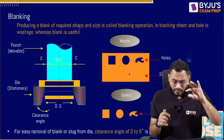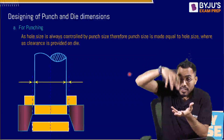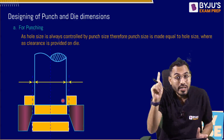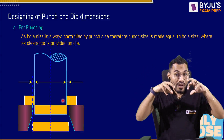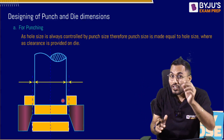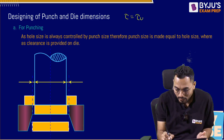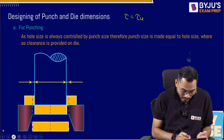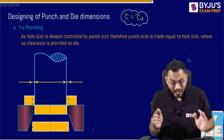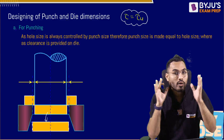Whenever we talk about punching and blanking, the punch starts penetrating in the thickness direction. As the punch penetrates along the shear area, the shear strength starts increasing. At one point, when the punch has penetrated sufficiently, the shear stress reaches the ultimate shear stress and fracture takes place. There is a propagation of crack and a piece gets separated — that piece is called a blank or slug.